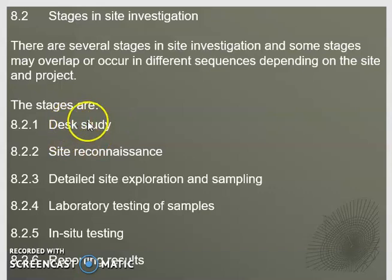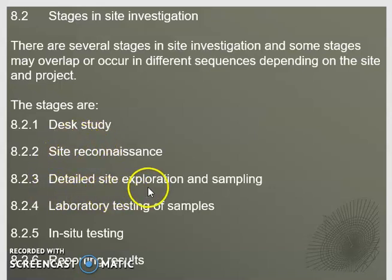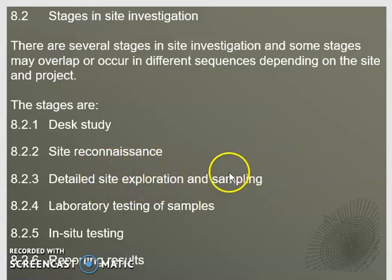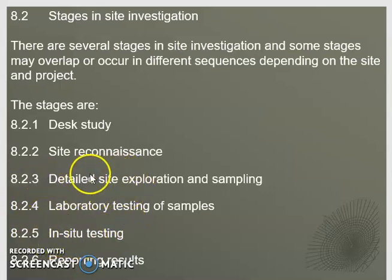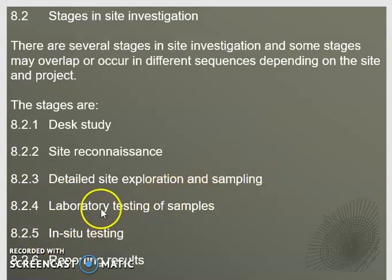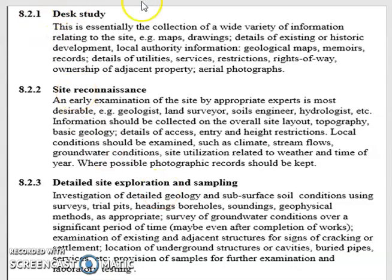A proper site investigation consists of different stages — some may overlap or occur in slightly different sequence depending on the site and the project. Typically you need to do some kind of desk study and visit the site to understand the site constraints. After that you proceed to carry out a detailed site investigation involving collection of soil samples. You may carry out in-situ tests on the same day or at different dates, then bring samples to the lab for lab testing, and once you have all data you can report your results.